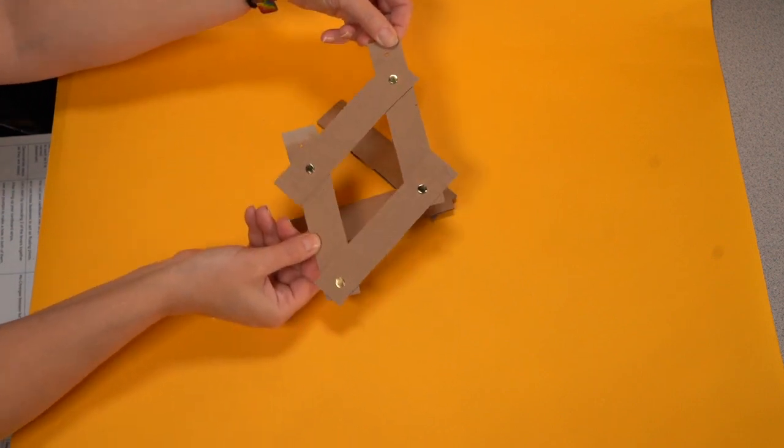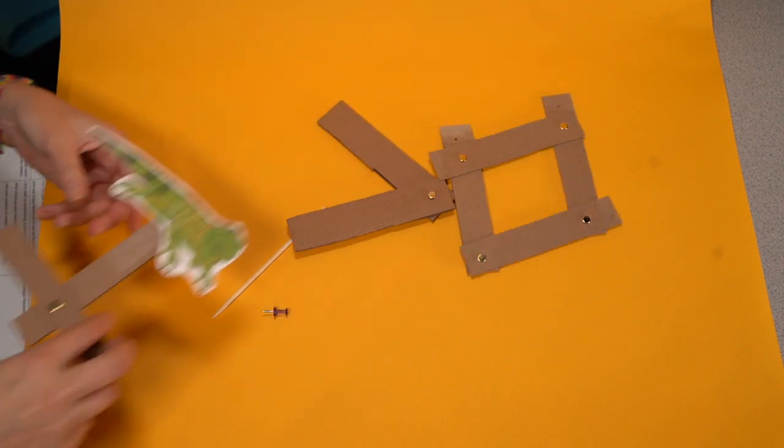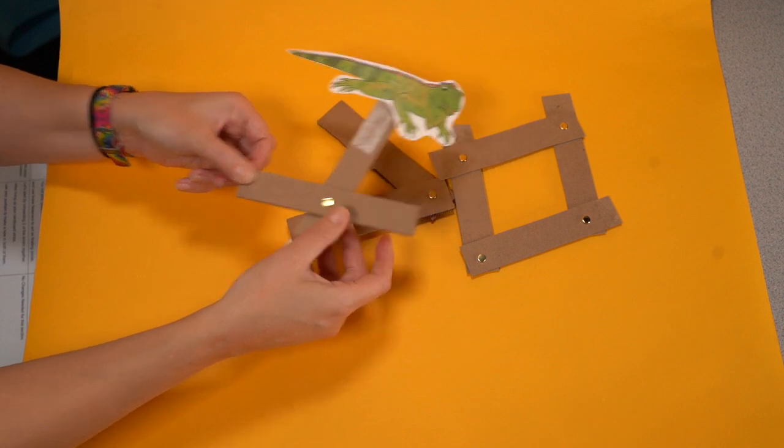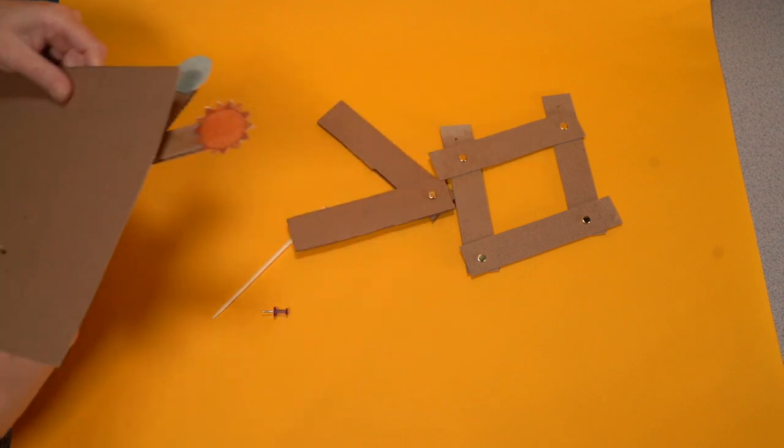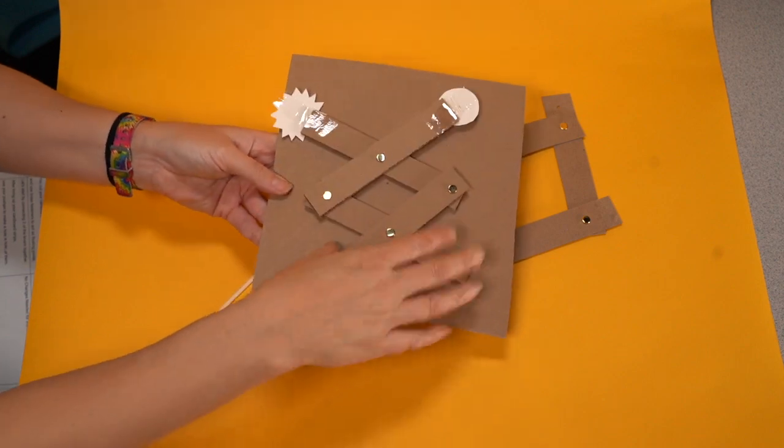You can connect your cardboard strips into a parallelogram like I did in my examples. Or you can experiment by connecting them in different places, or by using a different number of strips. See what kinds of motions you can create.